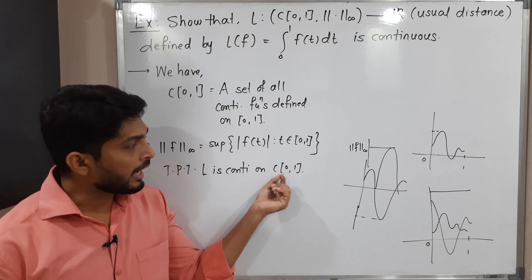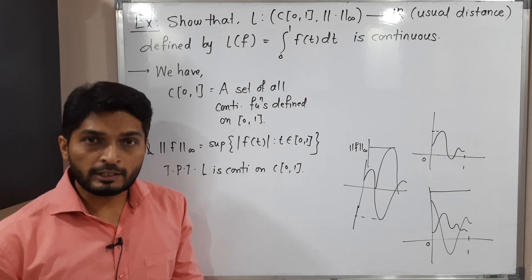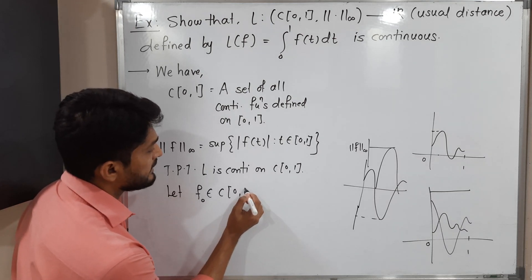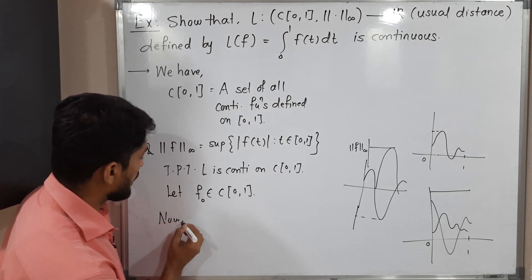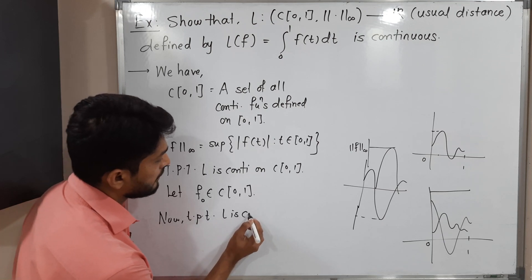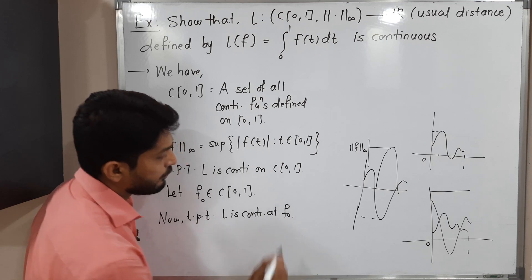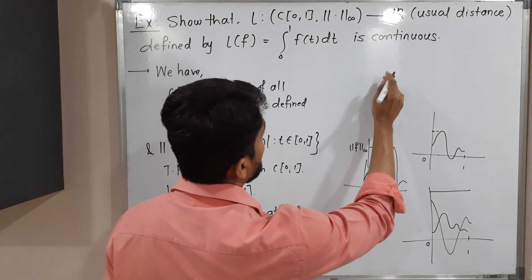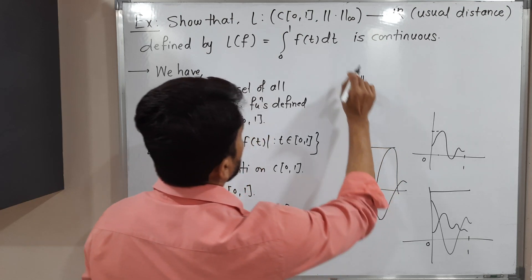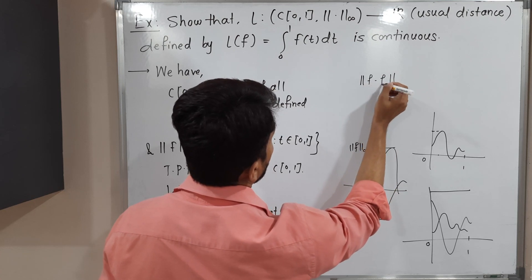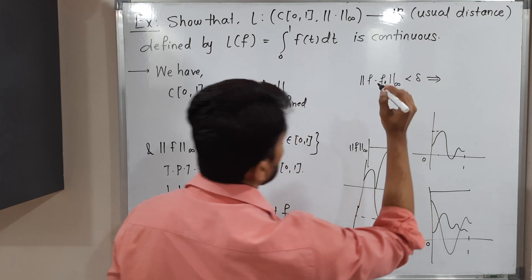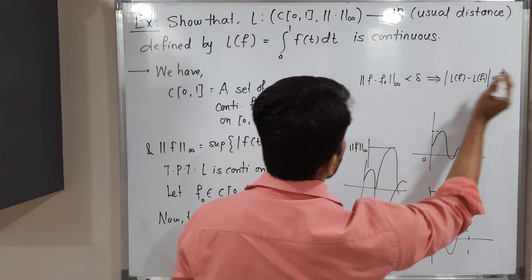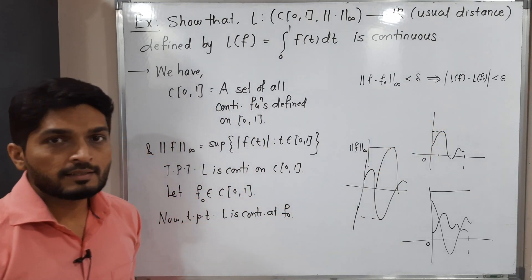Normally what we do is take any arbitrary function from this set and prove that L is continuous at that function. So let f₀ belong to C[0,1] — an arbitrary function. Our target is to prove that L is continuous at f₀. Using the epsilon-delta definition: for given ε > 0 there exists δ > 0 such that whenever ‖f − f₀‖∞ < δ in the domain, we have |L(f) − L(f₀)| < ε in the codomain. In this way we prove L is continuous at f₀.